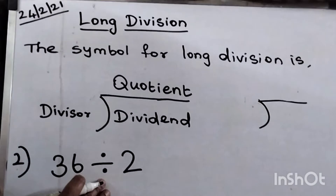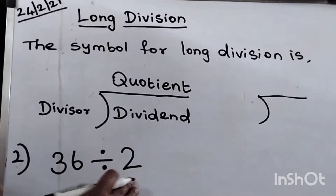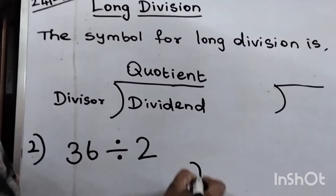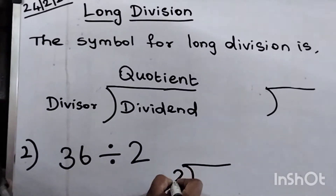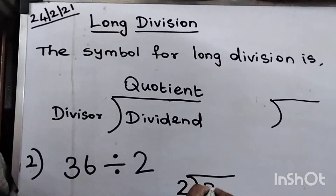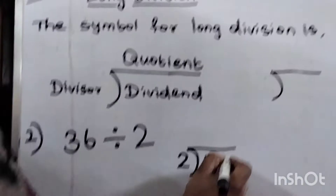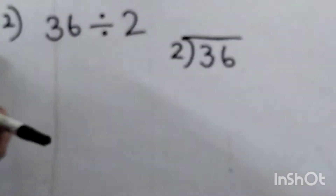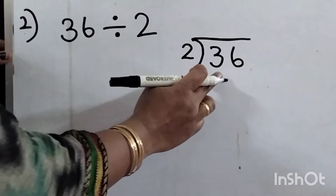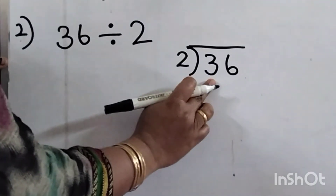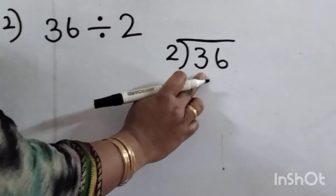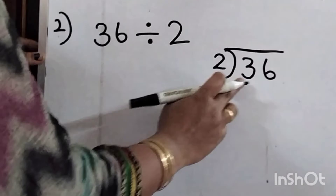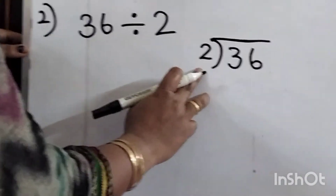Now let's move on to the next sum: 36 divided by 2. We are going to do this by the long division method. 2 goes into 36. Look for the first digit — it is 3 here, and 3 is greater than the divisor 2.